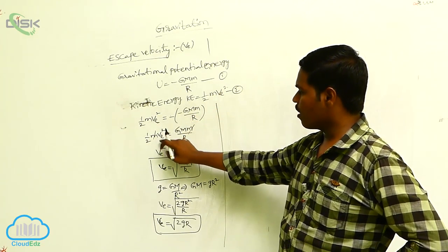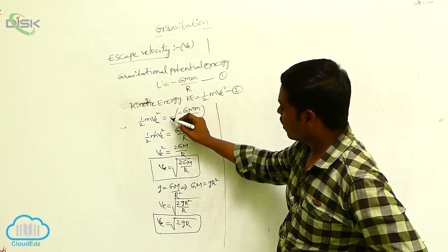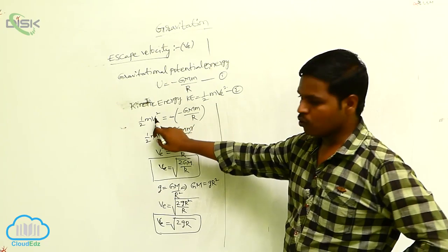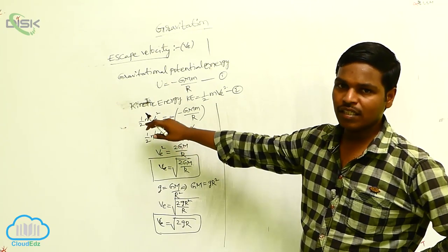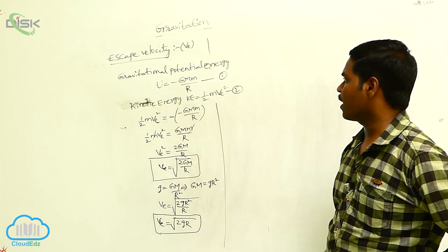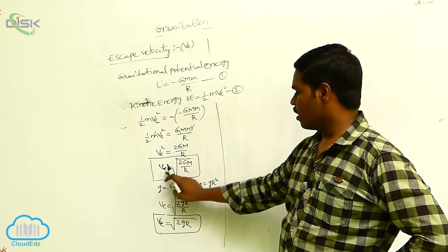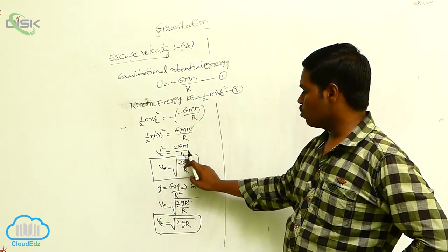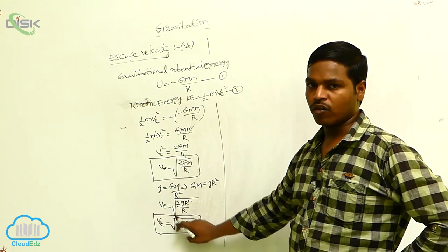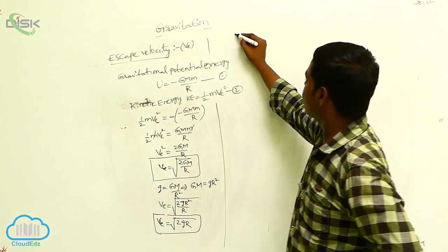Half m Ve squared is equal to GMm by R. The minus sign denotes that these two energies are equal and acting in the opposite direction. Then Ve equals the square root of 2GM by R, or Ve equals the square root of 2gR.